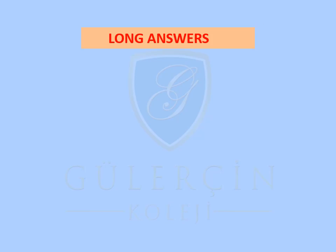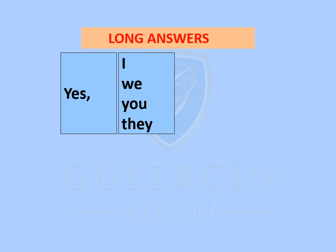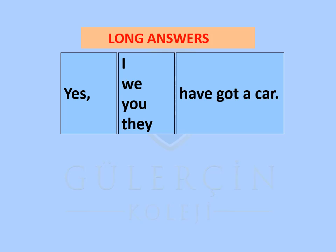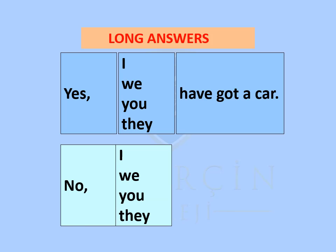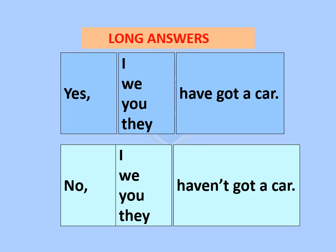Long answers: Yes, I have got a car. Yes, we have got a car. Yes, you have got a car. Yes, they have got a car. No, I haven't got a car. No, we haven't got a car. No, you haven't got a car. No, they haven't got a car.